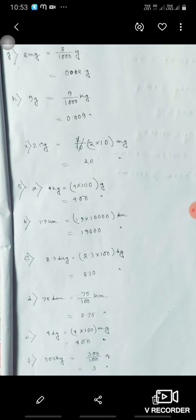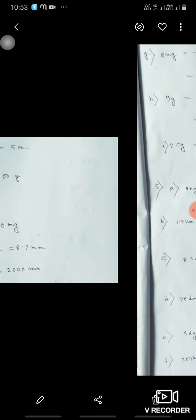1.9 kilometer means 1.9 into 10,000 means 19,000 decimeter. 8.3 decagram means 8.3 into 100 decigram, that is 830. 75 decameter means 75 upon 100 kilometer, 0.75 kilometer. 4 decigram means 4 into 100 milligram, 400 milligram. 300 kilogram means 300 upon 100 quintal, that is 3 quintal.